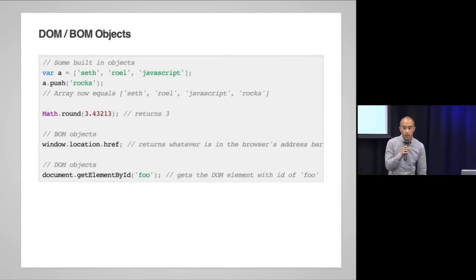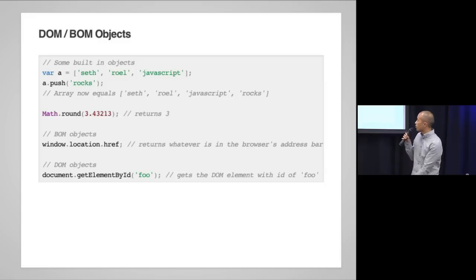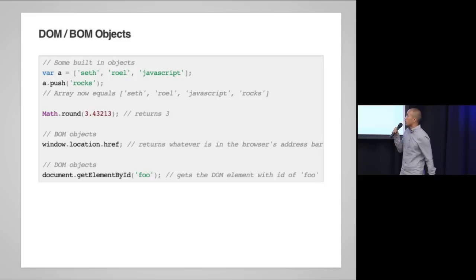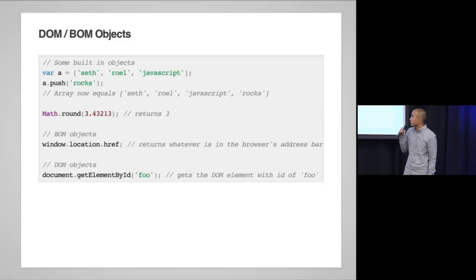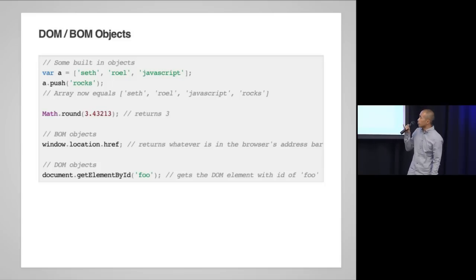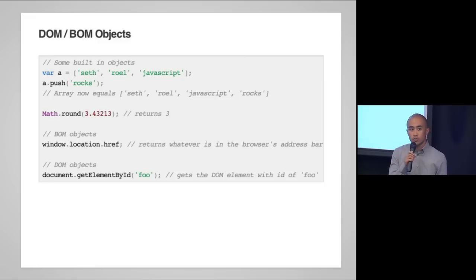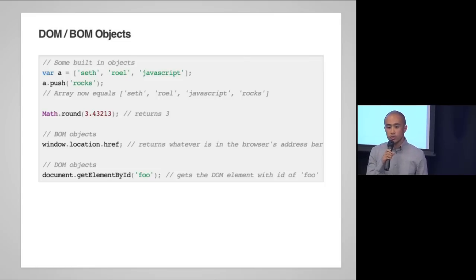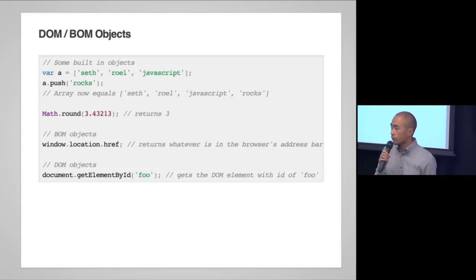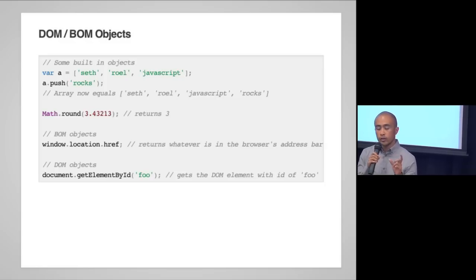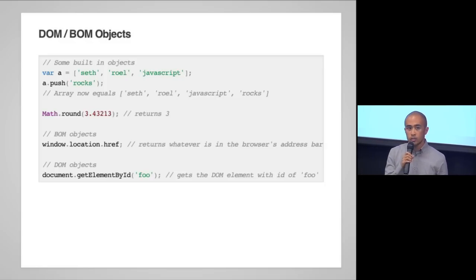JavaScript also has some built-in objects you can use for free. Native objects include arrays — you can create an array with strings like 'Seth', 'Rowell', 'JavaScript', and add to it by calling the push method. There's the Math object for things like generating random numbers or rounding — Math.round(3.4) returns 3. You also get objects from the host environment, like the browser. You can do things like window.location.href to get the URL in the address bar. There are also DOM objects — for example, document.getElementById('foo') retrieves the element with id 'foo'. There will be a dedicated JS bootcamp session focused more on DOM retrieval.